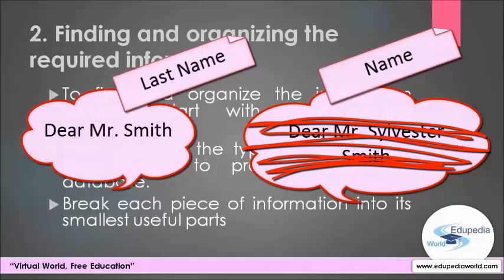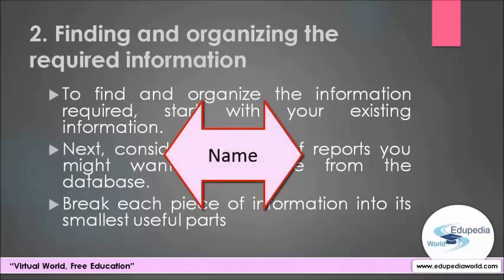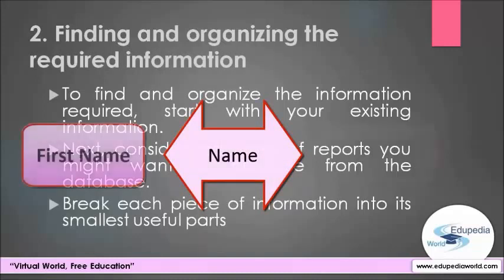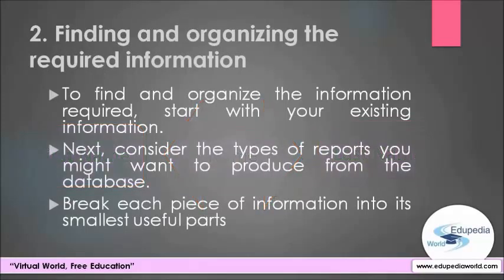A key point to remember is that you should break each piece of information into its smallest useful parts. In the case of a name, to make the last name readily available, break the name into two parts: first name and last name. Having the customer's last name stored separately helps sort the information by last name. In general, if you want to sort, search, and calculate based on an item of information, you should put that item in its own field. Think about the questions you might want the database to answer — for instance, where does the best customer live, or who is the supplier for your best-selling product?